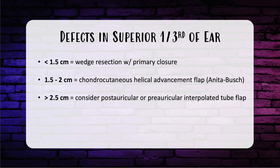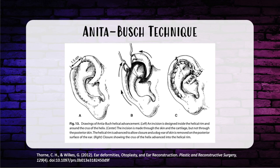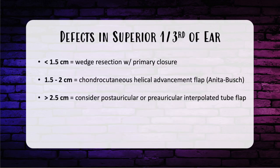For ear reconstruction, always think in thirds: superior, middle, or inferior. For superior third defects less than 1.5 centimeters, perform wedge resection and primary closure. For defects 1.5 to 2 centimeters, perform a chondrocutaneous helical advancement flap — the Antia-Buch technique — making cuts along the helix to allow advancement of both cranial and caudal helical chondrocutaneous flaps. For defects more than 2.5 centimeters, consider a posterior auricular or preauricular interpolated tube flap.